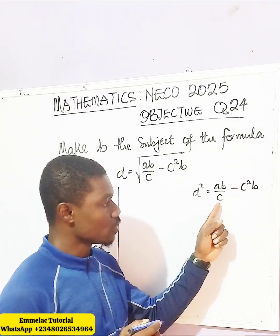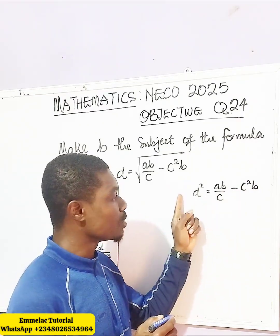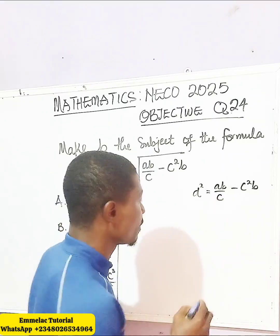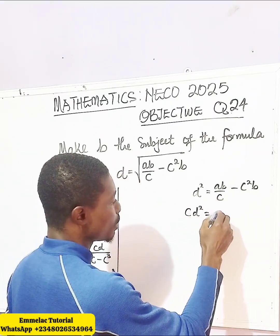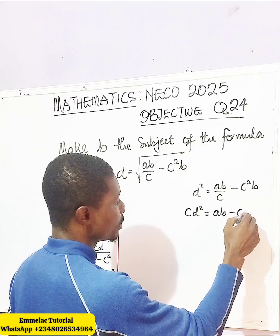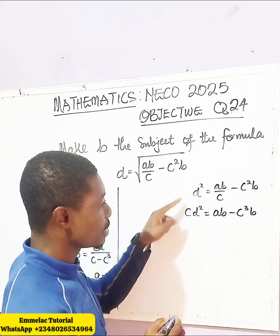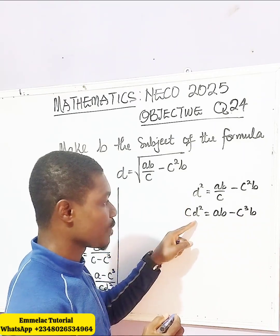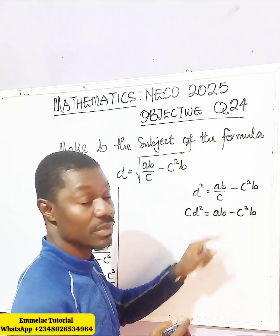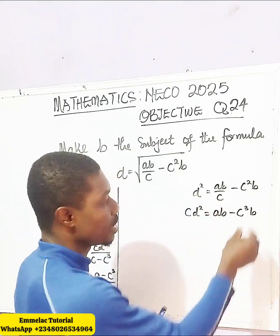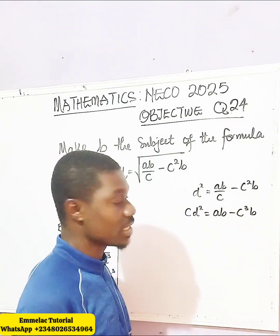To undo this C, which is the denominator, let's multiply both sides of the equation by C. So we end up having CD squared equals AB minus C cubed B. When we multiply C by this fraction, C will be eliminated leaving AB, and when we multiply C squared B by C, we get C raised to the power of 3 times B.